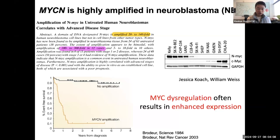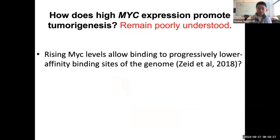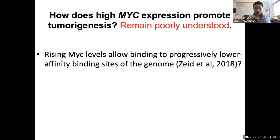MYCN is highly amplified, up to 300-fold, in a type of tumor called neuroblastoma. This amplification leads to poor survival rate, and the genetic amplification results in high protein expression levels in contrast to non-amplified cells. In general, MYC dysregulation often results in enhanced expression. The question is: how does enhanced expression promote tumorigenesis? One hypothesis is that enhanced expression allows binding to low-affinity binding sites of the genome, leading to expression of additional genes promoting tumorigenesis.